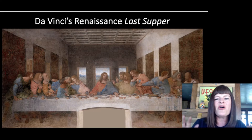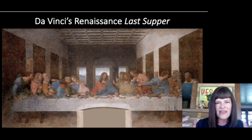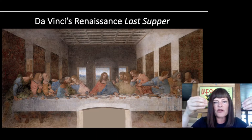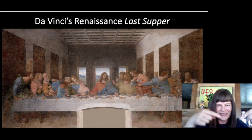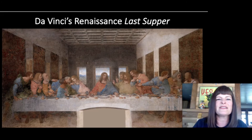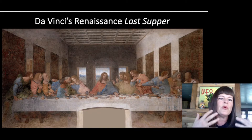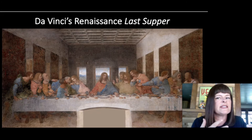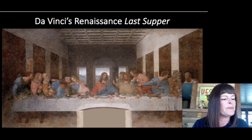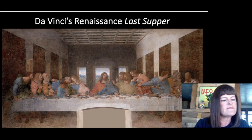Take a look at how da Vinci composed this painting. All of the receding lines in the linear perspective point straight to Jesus at the center. If you look at how those lines recede into space, everything takes your eye to Jesus there. Even the light surrounding his head puts him in a position different from some of the other apostles, making him stand out from the group.